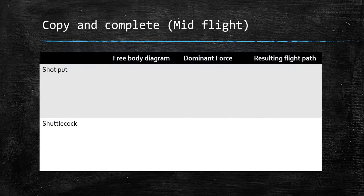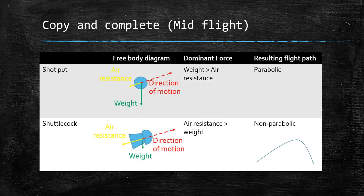Pause the video and try to complete this table, drawing a free body diagram to represent mid-flight for a shot put and a shuttlecock, stating what the dominant force would be and the resulting flight path. For the shot put, the weight arrow is large; for the shuttlecock, the weight arrow is low. We have a direction of motion arrow and the air resistance arrow in the opposite direction, with the shuttlecock's air resistance arrow being larger. The dominant force for the shot put is weight over air resistance, whereas for the shuttlecock it is air resistance over weight. Therefore the shot put flight path is parabolic and the shuttlecock flight path is non-parabolic.